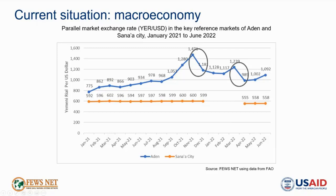This is significant because Yemen is highly dependent on imports of essential food and non-food commodities, including fuel, and depreciation of the currency makes imports more expensive, with costs passed on to consumers through rising domestic prices. Meanwhile, in SBA-controlled areas including Sanaa City, the exchange rate has remained generally stable due to strict control measures and better supply of foreign currency through trade and remittances.